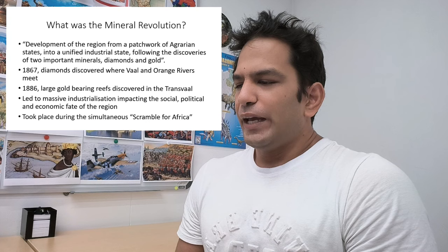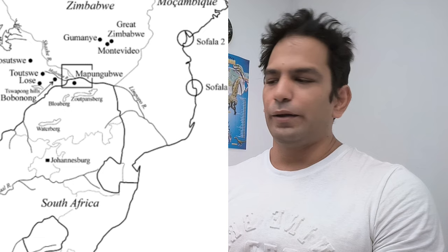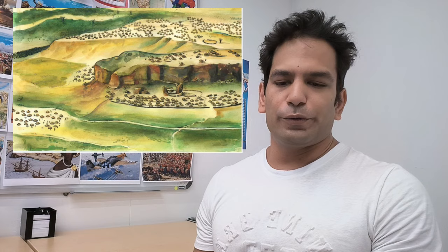In 1886, large gold-bearing reefs were discovered in the Transvaal. Gold was not truly discovered in 1886 — if you go back 800 years, the Kingdom of Mapungubwe and societies like Thulamela had been mining gold. But from the colonial perspective, this period is very important. The big gold-bearing reefs discovered by George Harrison happened in 1886 and represented a huge, vast amount of gold — though it was high quantity but low quality, with little fragments distributed deep over a very wide area, requiring a lot of capital investment to mine.